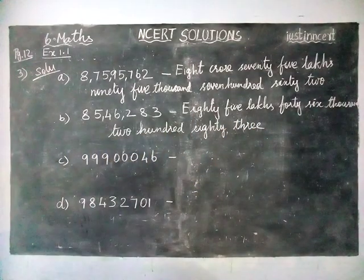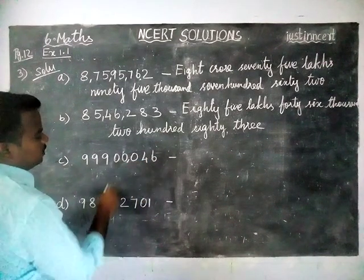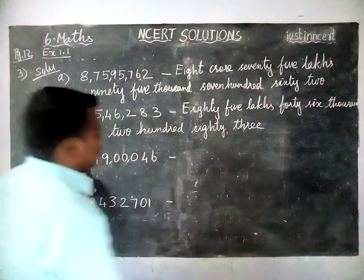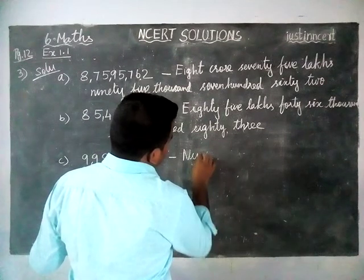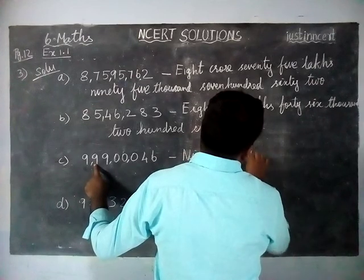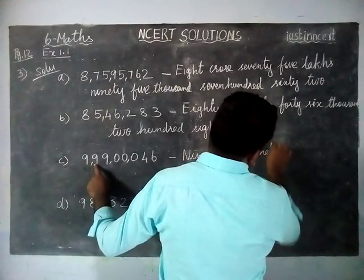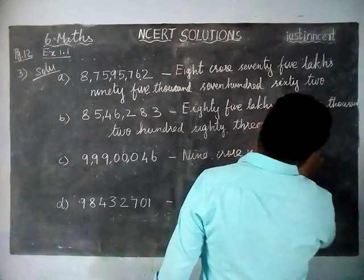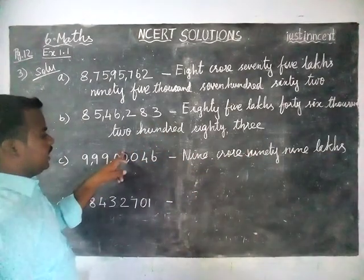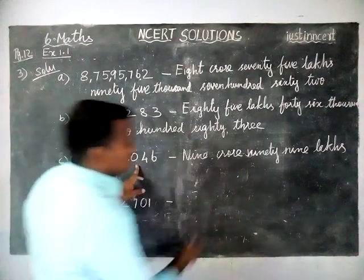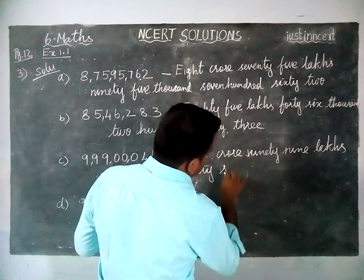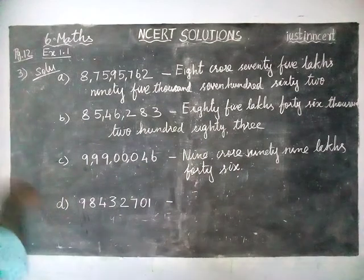Next, the third number: ones, tens, hundreds, thousands, ten thousands, lakhs, ten lakhs. This number is nine crore ninety-nine lakhs, forty-six thousand.